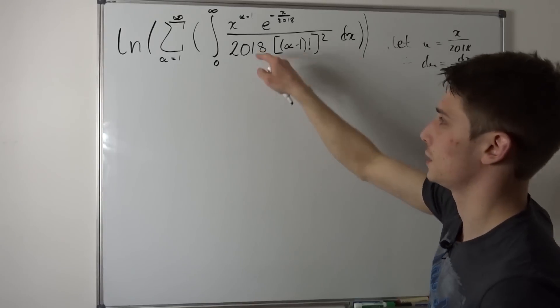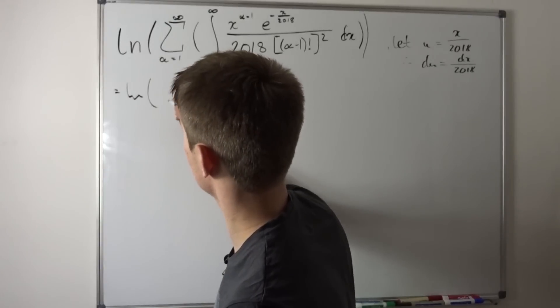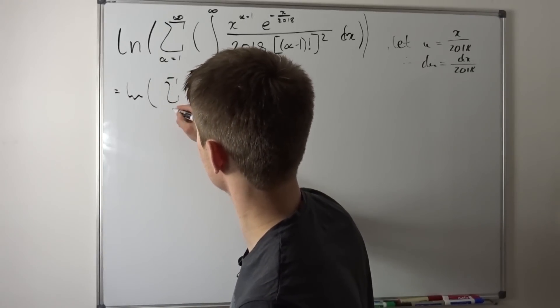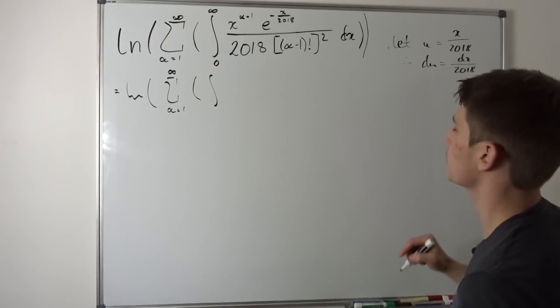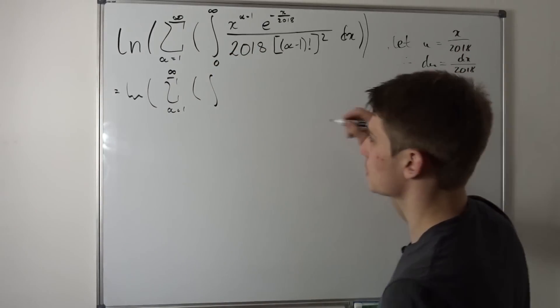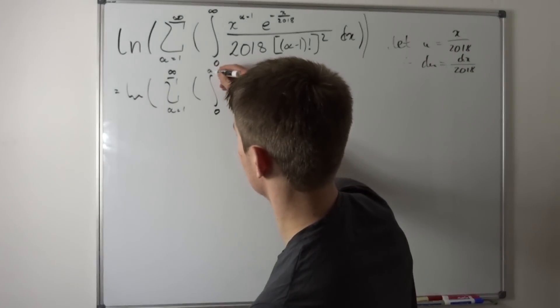Here's also another great thing: dx over 2018, which is our du, is right here. So this simplifies a lot. So right now that's the natural log of the sum from alpha equals 1 to infinity. And now our integral runs from, if you plug in 0 into here that's still just 0, and if you plug infinity into here, well u goes to infinity. So that's nice.